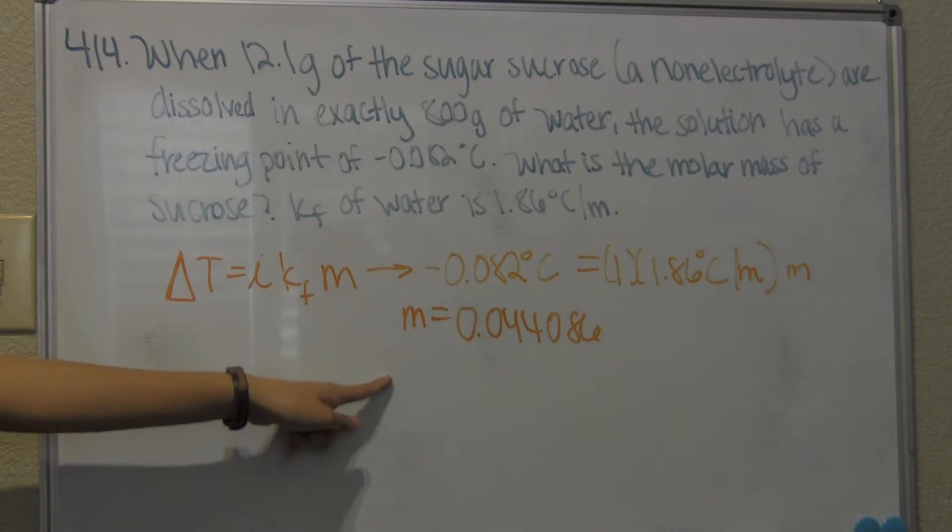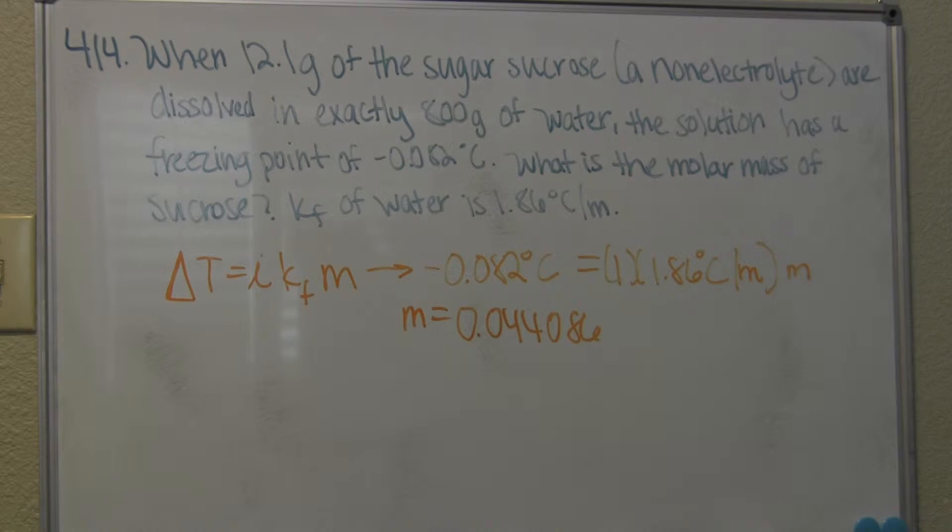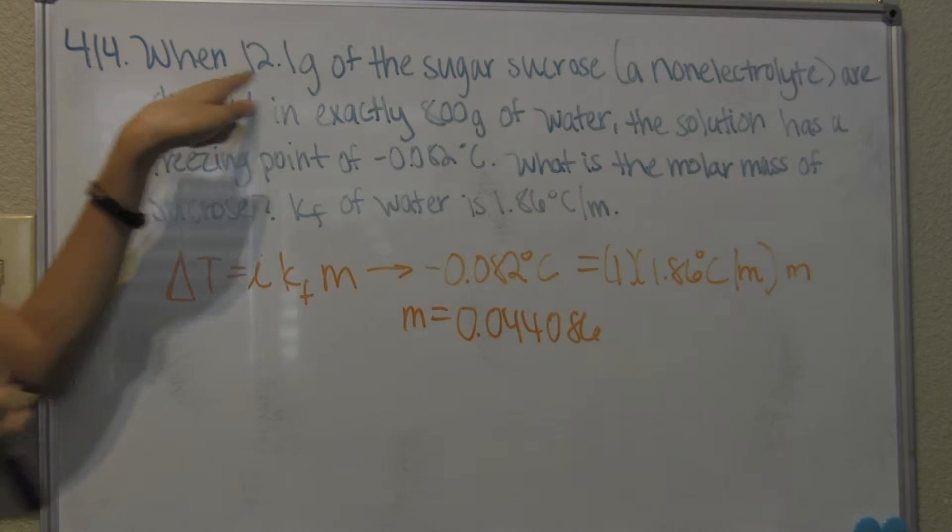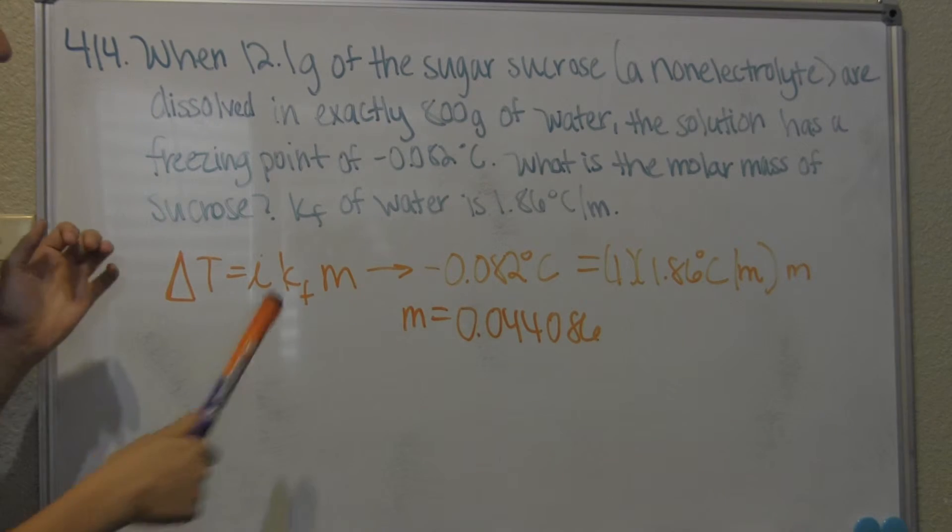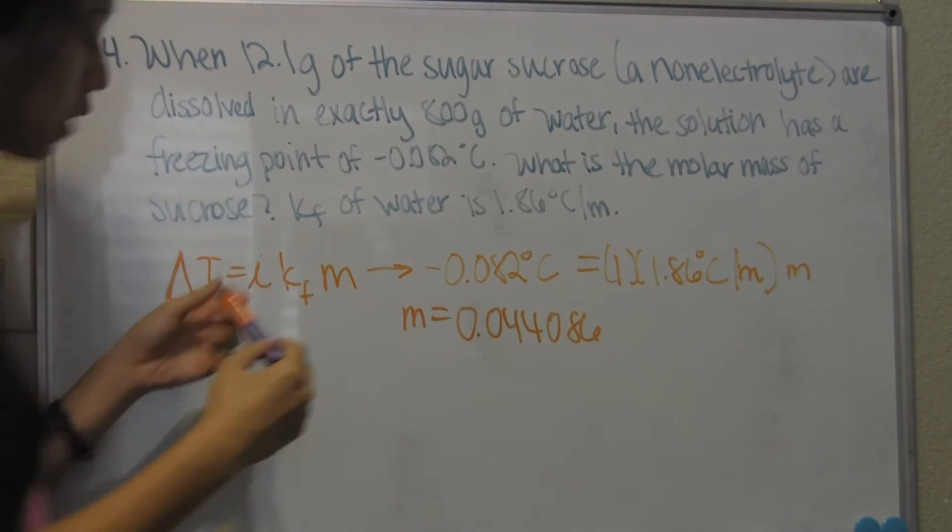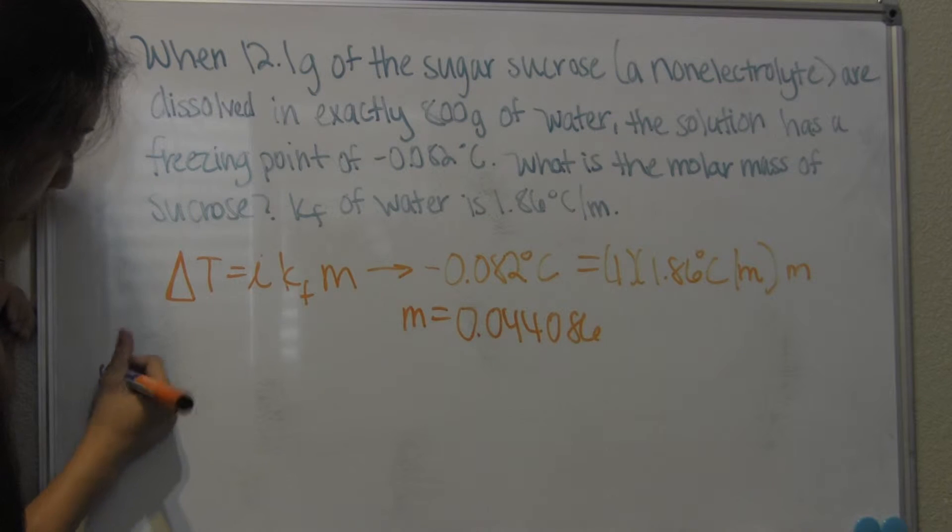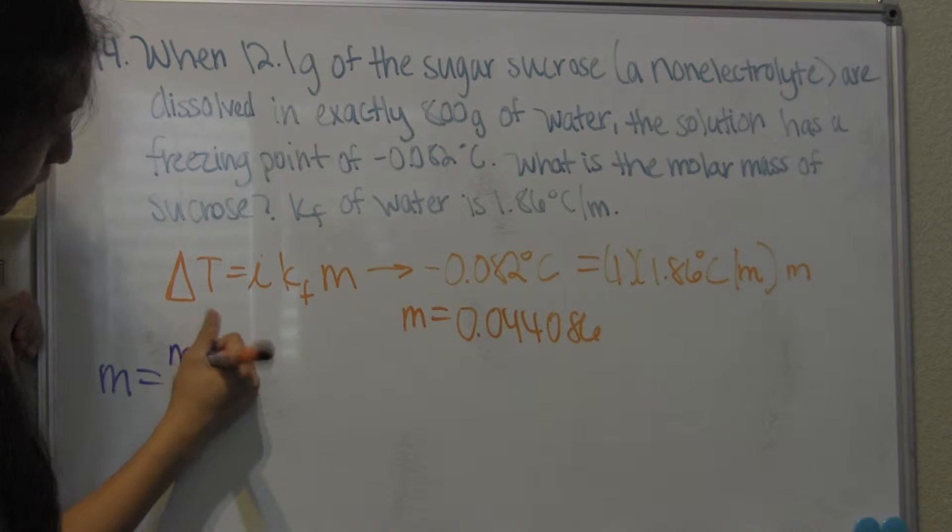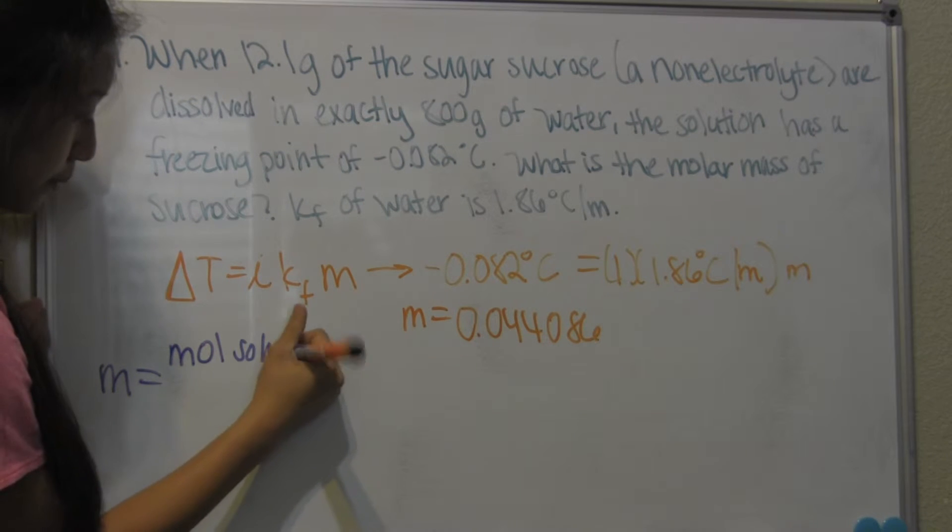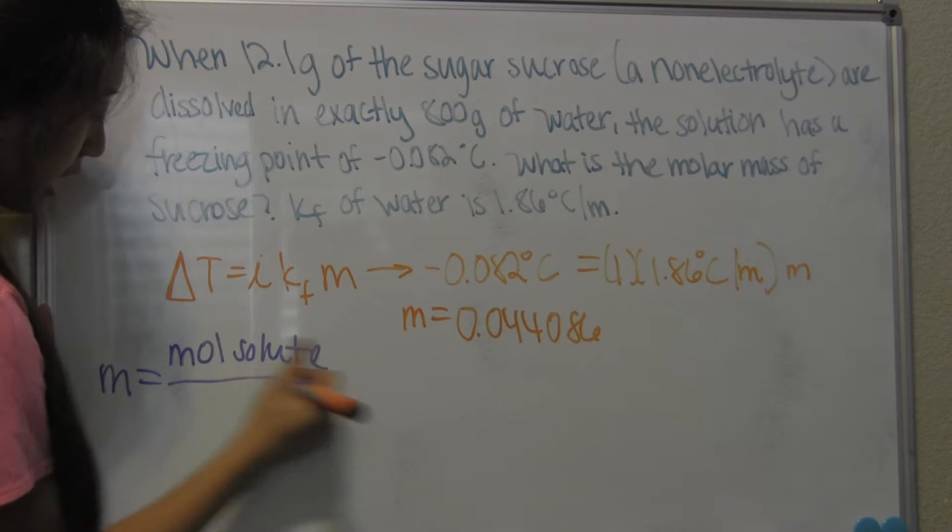And from there, since we have a molality and we have the 800 grams of solvent, we have to find the moles of solute of the sugar sucrose. Since we have the solvent, which is the water, what we do is molality equals moles of solute over kilograms of solvent.